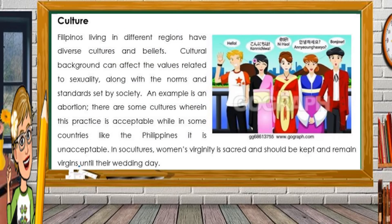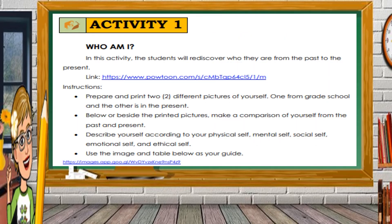In terms of culture, Filipinos living in different regions have diverse cultures and beliefs. Cultural background can affect values related to sexuality along with the norms and standards set by society. For example, abortion is a practice acceptable in some cultures, while in countries like the Philippines it is unacceptable. In some cultures, women's virginity is sacred and should be kept until their wedding day.